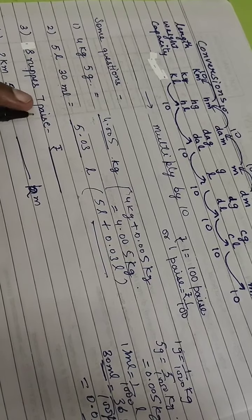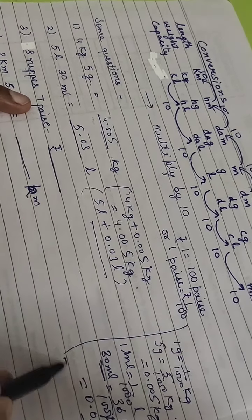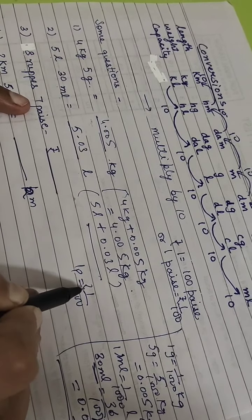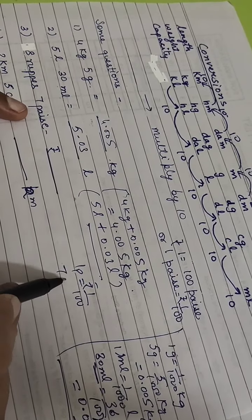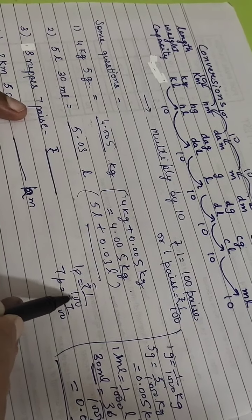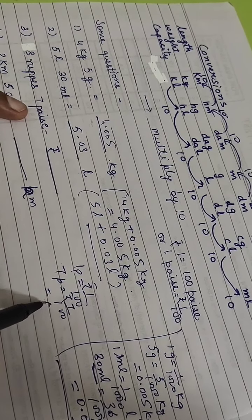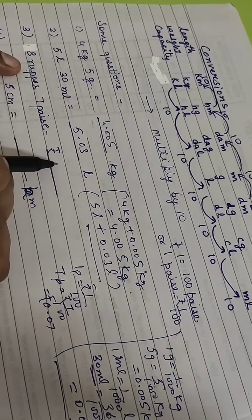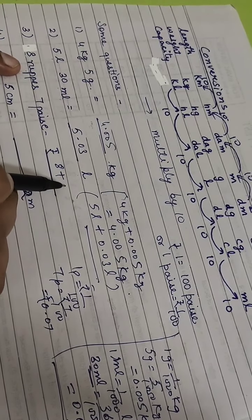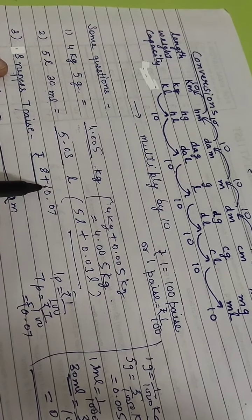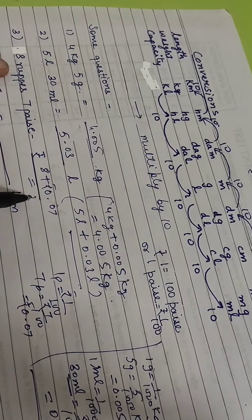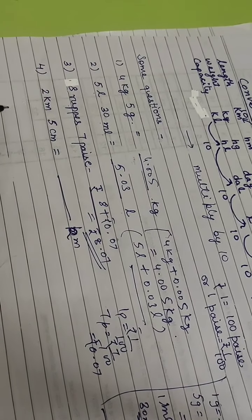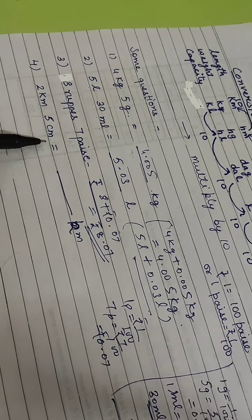Now convert 8 rupees 7 paisa. As you know, one paisa equals one divided by one hundred rupees. So seven paisa equals seven divided by one hundred rupees, which in decimal is 0.07 rupees. Therefore 8 rupees plus 0.07 gives the answer 8.07 rupees.